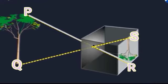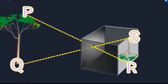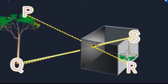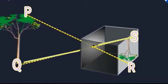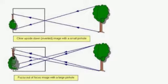and falls at R on the screen. In the same way, the ray from the bottom of the tree Q falls at S. Thus SR is a small inverted image of the tree on the screen.